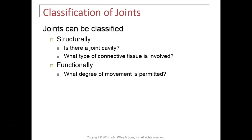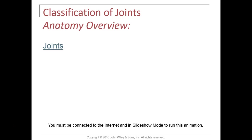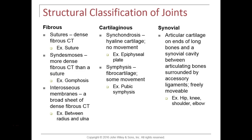Functionally, we'll classify joints depending on whether movement is permitted at the joint, and if movement is permitted, how much movement is permitted. We're going to look at joints considered to be fibrous, cartilaginous joints, and then synovial joints towards the end.